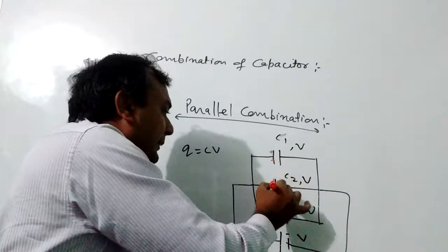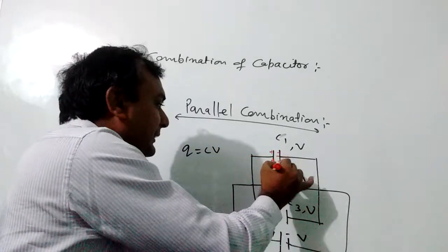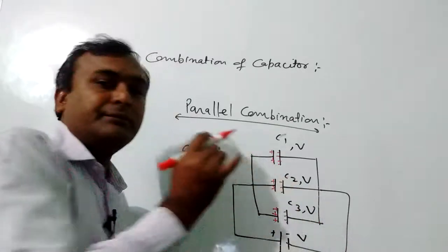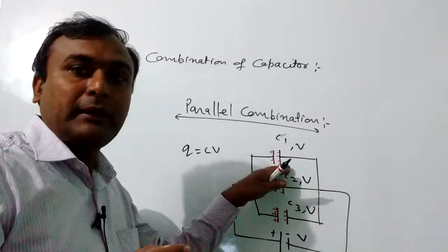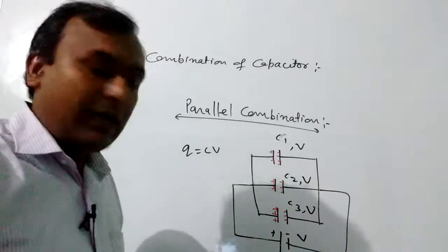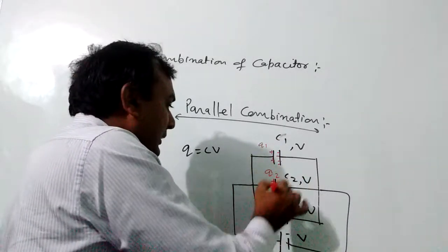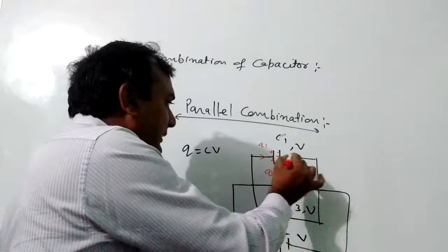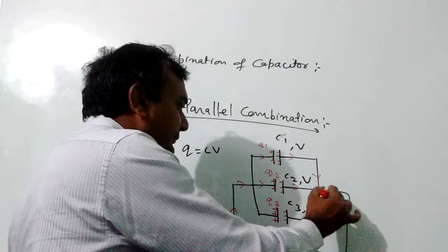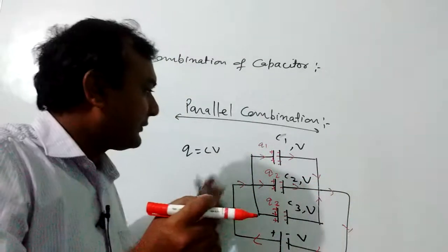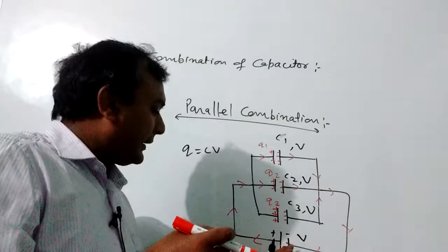Here is the positive charge, and then the charge will be negatively induced. When polarization is complete, the charge will not flow further — the charge will be the same. This charge is Q1, this is Q2, and this is Q3. The positive side charges on the left plate and the right side charges correspondingly.